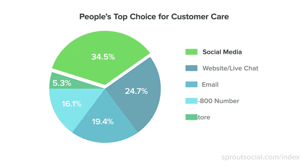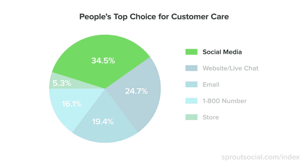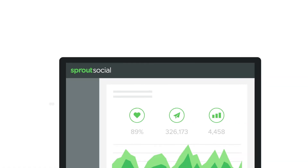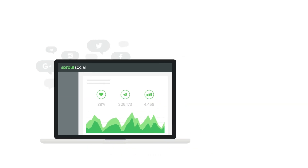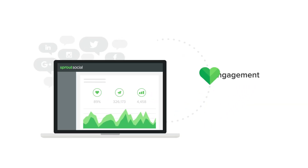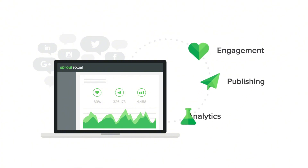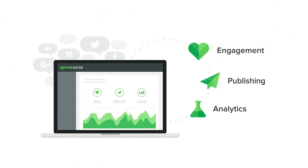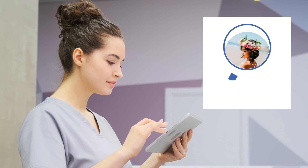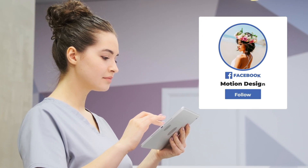Sprout Social is basically an all-in-one platform that helps you manage your social media. Whether you're running a business or handling social media for clients, Sprout Social lets you schedule posts, track performance, respond to messages, and even analyze your audience all in one dashboard.